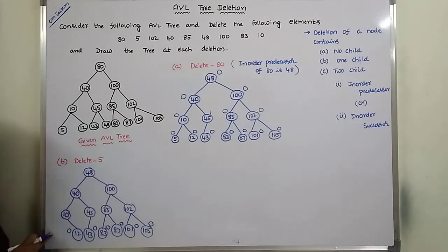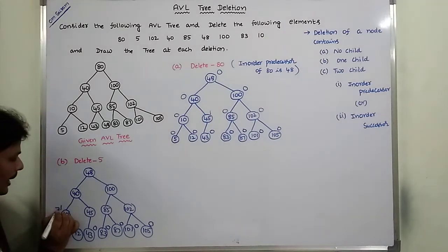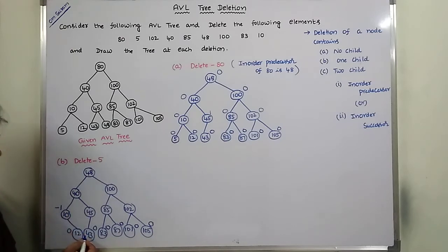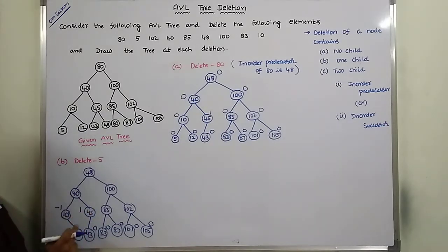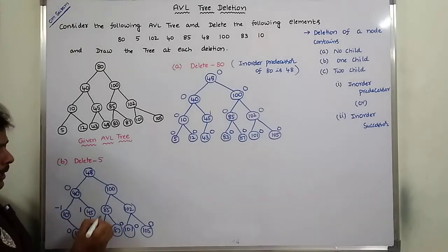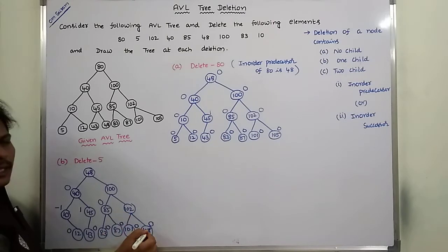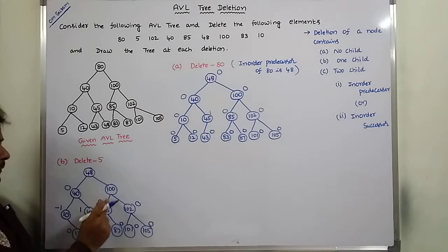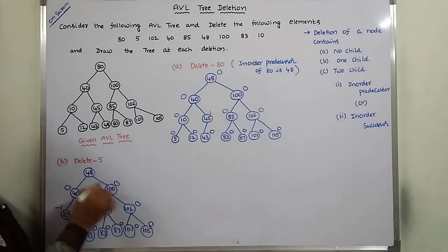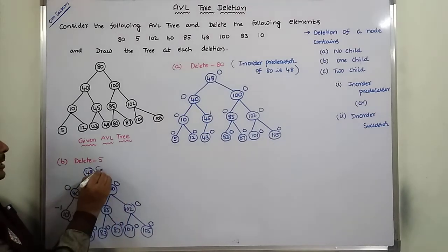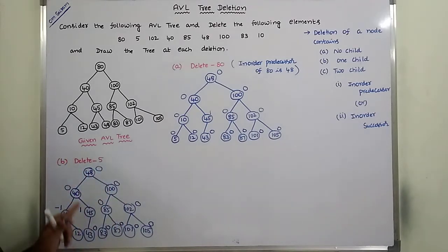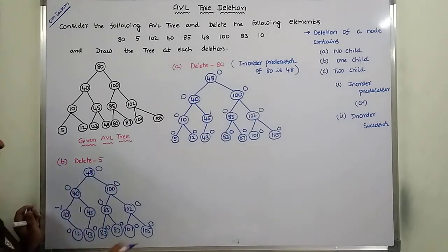Now we check the balance factors. All leaf nodes have balance factor 0. For node 10: left subtree height 0, right subtree height 1, balance factor -1. For node 45: left subtree height 1, right subtree height 0, balance factor 1. For node 40: left subtree height 2, right subtree height 2, balance factor 0. For nodes 85 and 102: balance factor 0. For node 100: balance factor 0. For root 48: left subtree height 3, right subtree height 3, balance factor 0. All nodes have valid balance factors of 0, 1, or -1, hence it remains an AVL tree.